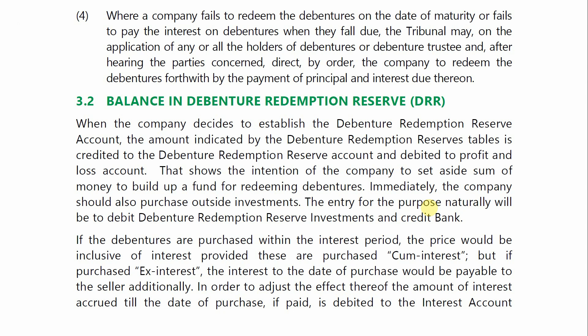It comes to the understanding that the company has some funds set aside so that there is no shortfall for debenture redemption. The company should also purchase outside investment. The entry for this purpose will naturally be to debit debenture redemption reserves investment and credit bank.